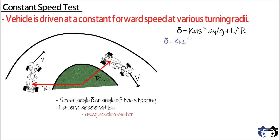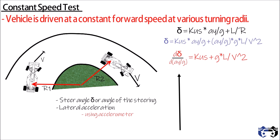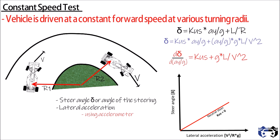Using the known equation, on differentiating with respect to lateral acceleration we get: kus plus g times L divided by V squared. On plotting the curve between steering angle delta and lateral acceleration, when kus equals 0 the car is neutral steer and the slope of the curve is constant, which equals gL divided by V squared.